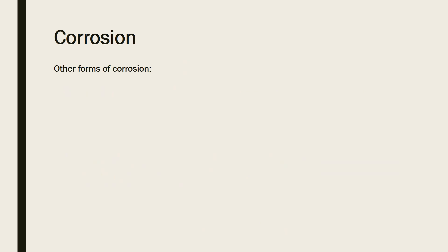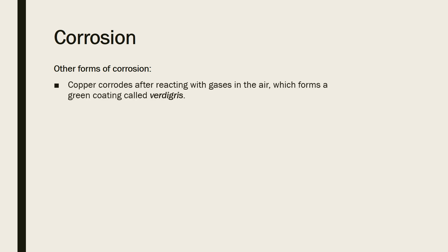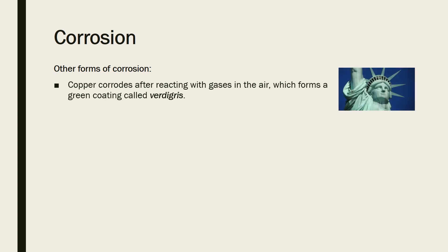Rusting is probably the most common example of corrosion, but we do have some other examples as well. Copper corrodes after reacting with gases in the air to form a green coating called verdigris, and the Statue of Liberty is a great example of this. It's made of bronze, and initially it was a bronze colour, but because a key component of bronze is copper, over time it's gone from a bronze colour to green because of that corrosion of copper.